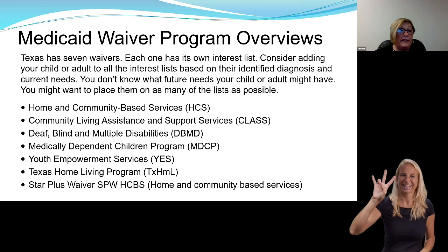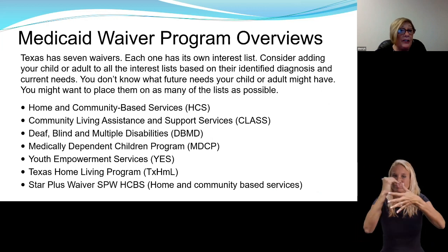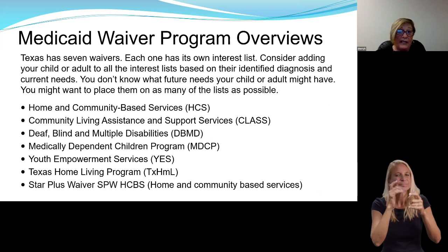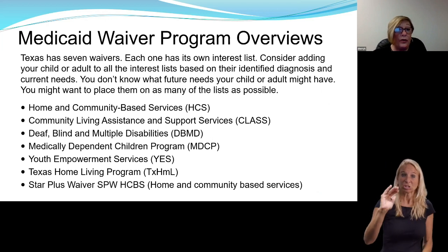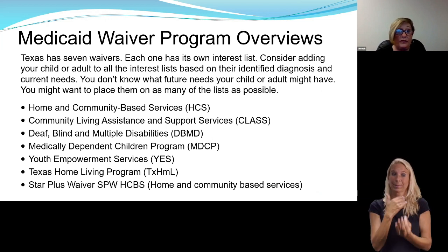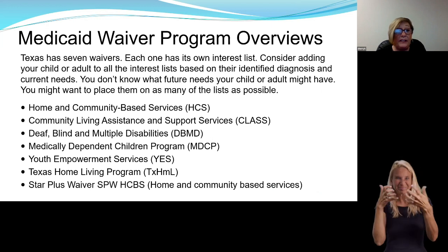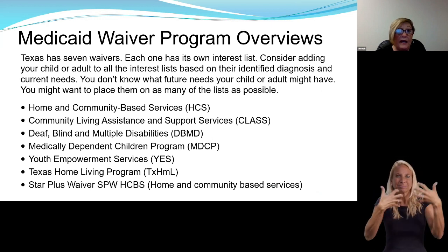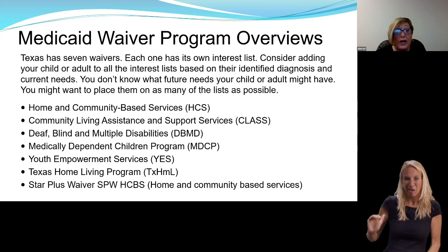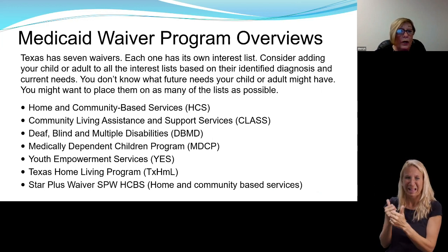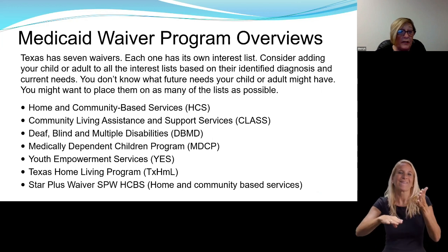We have seven Medicaid waivers in Texas. Each one has its own interest list. Consider adding your child or adult family member to all of the interest lists based on their identified diagnoses and current needs. You don't know what the future holds, so it's good to place them on as many interest lists as possible.